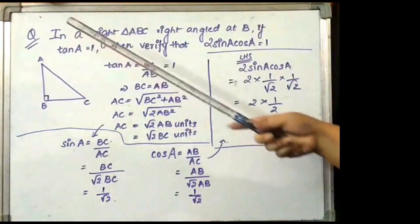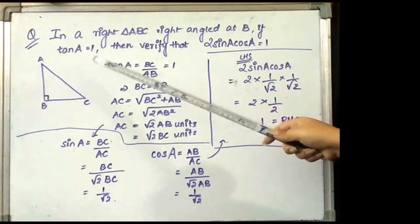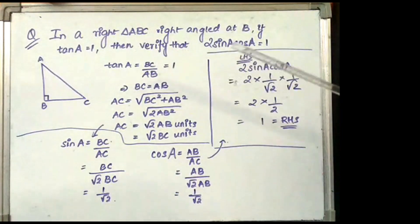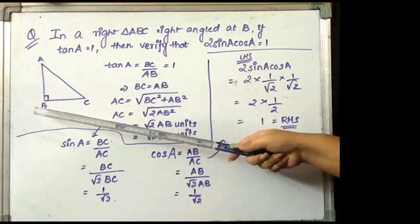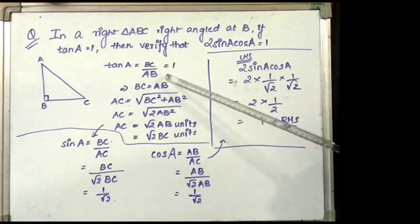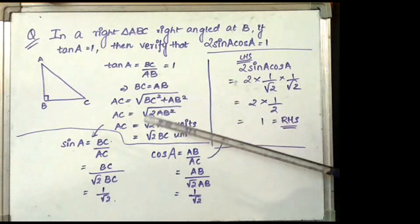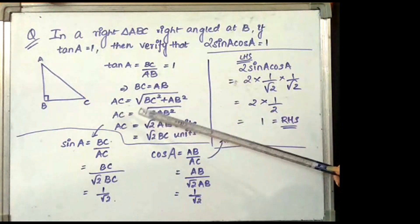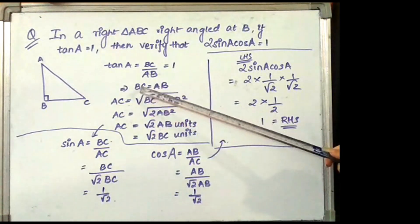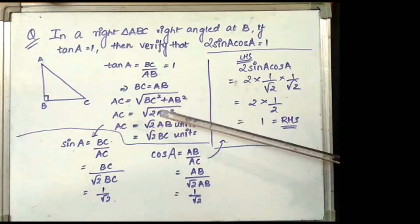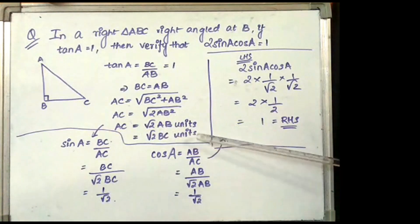The next question is: in a right triangle ABC right angled at B, if tan A is equal to 1, then verify that 2 sin A cos A is equal to 1. We take triangle ABC right angled at B. Tan A equals BC by AB, which is equal to 1, implying that BC equals AB. Using Pythagoras theorem, AC = √(BC² + AB²) = √(2AB²) = √2 · AB = √2 · BC units.